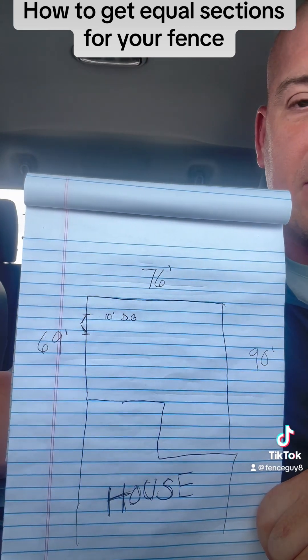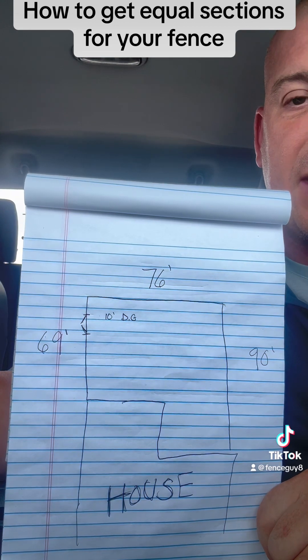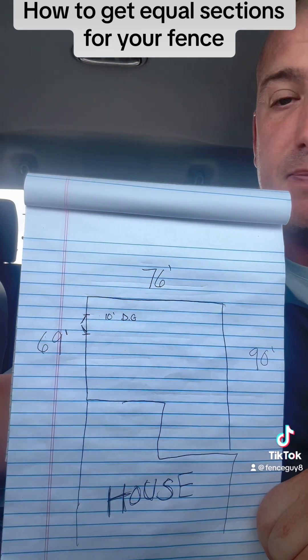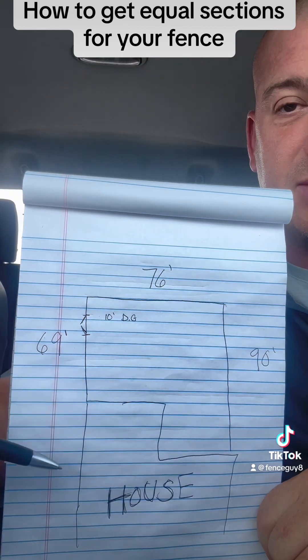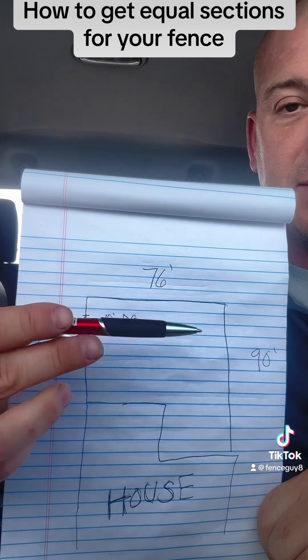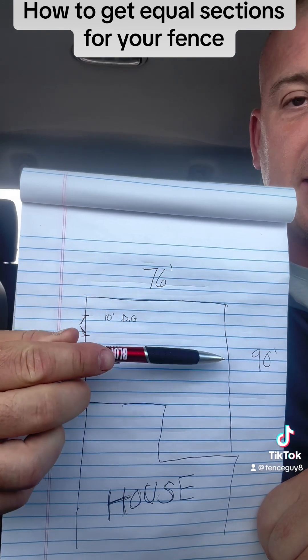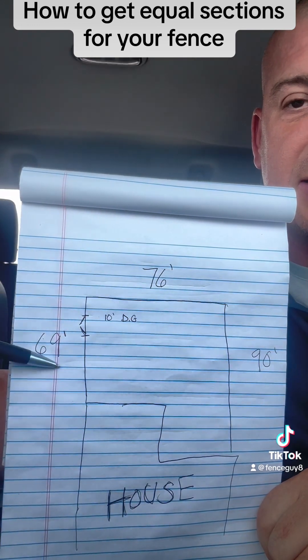Alright, this is my little drawing. I'm going to do this like in the estimating phase or when you're quoting a job. This is my house. Y'all don't make fun of my picture here, but this is the fence right here. These are the measurements: 90, 76, and 69.